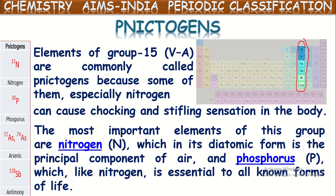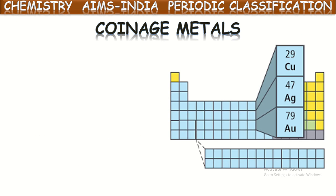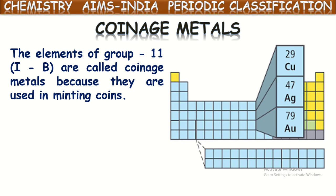Next, let us see one more group — coinage metals. In the periodic table, the first B group elements are the 11th column elements from the left side. Those elements are copper, silver and gold. These 11th group or 1B group elements are called coinage metals because they were used in minting coins mostly — not only for jewelry.